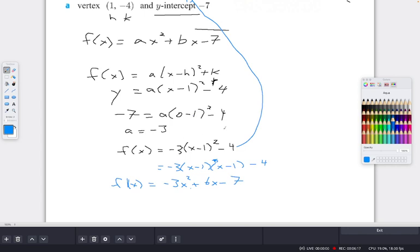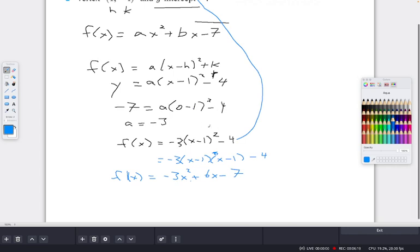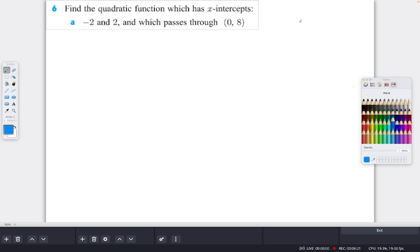And then to move to the third question, we have this one here. If we look at this one it says find the quadratic function which has x-intercepts -2 and 2, and which passes through (0, 8). So now, once again, you have to know your forms for quadratics.